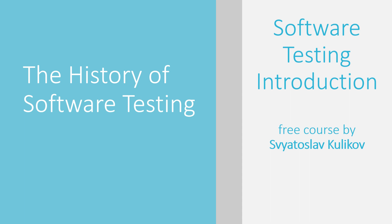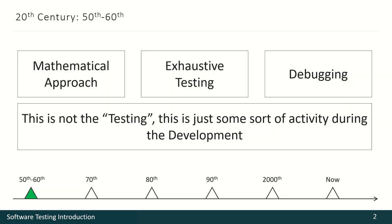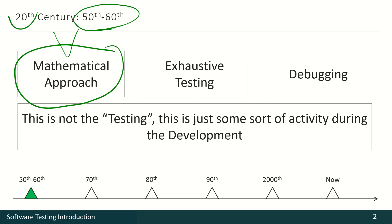In this video we shall talk about the history of software testing and the way it made through decades to become the software testing we know today. The story begins almost a hundred years ago, in the 50s and 60s of the 20th century. Software development came to everyday life then, but the mathematical approach was ruling all over the IT industry, and to software testing it brought the idea of exhaustive testing.